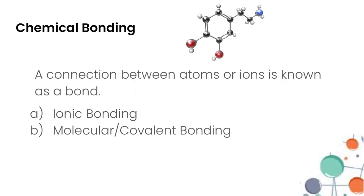Let's start by first defining what chemical bonding is. Chemical bonding is a connection between atoms or ions and that's known as a bond. There are two different types of bonds and they work quite differently. The first is ionic bonding which involves ions, and then the other type of bonding is covalent or molecular bonding which involves atoms.